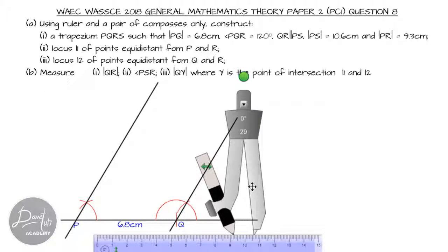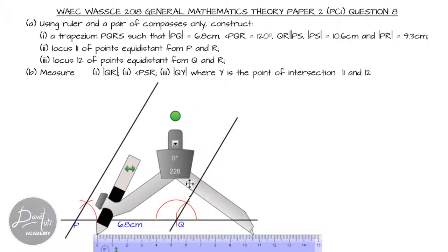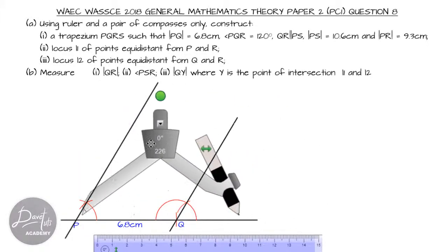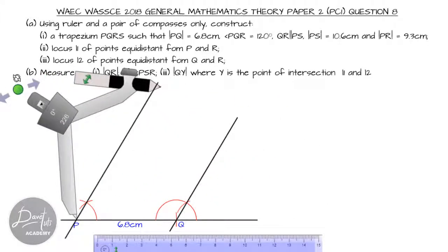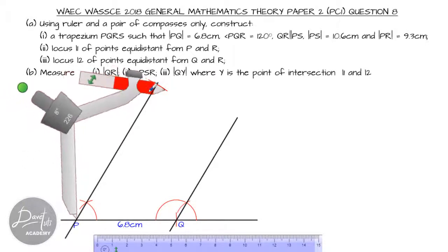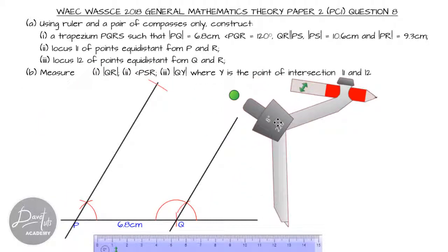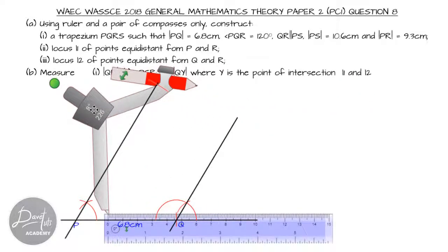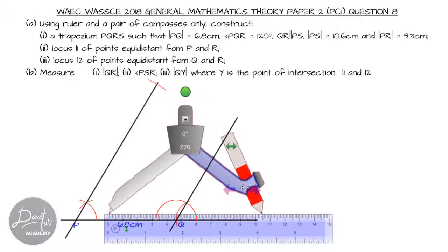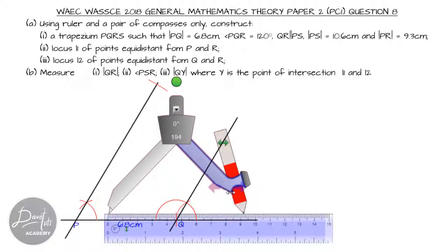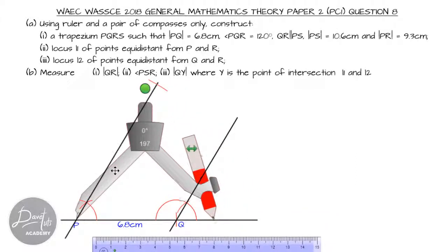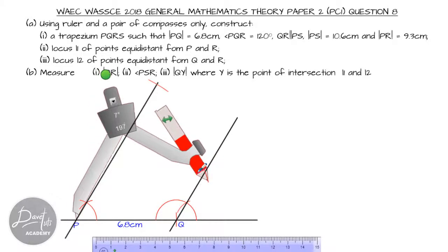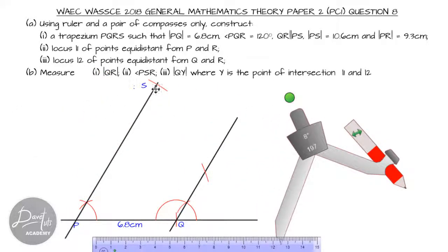Now to get the length 10.6 centimeters, I can mark that off on the ruler and then go to point P and mark off the arc. That is 10.6 centimeters from point P, and that will be point S. Then I can measure 9.3 centimeters, and once I'm through with that, I can take my compass back to point P and mark it off on the line from Q. That will be point R.